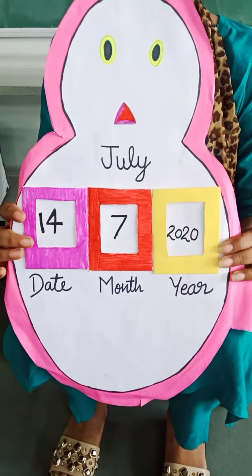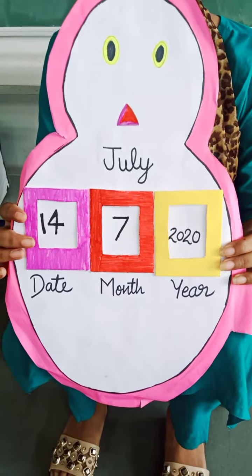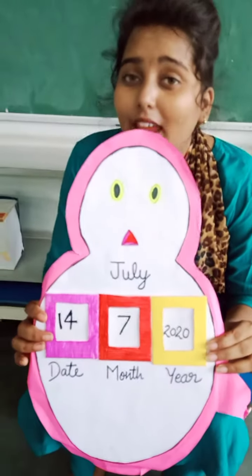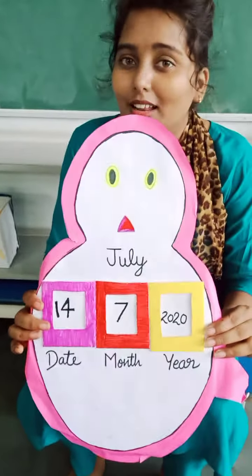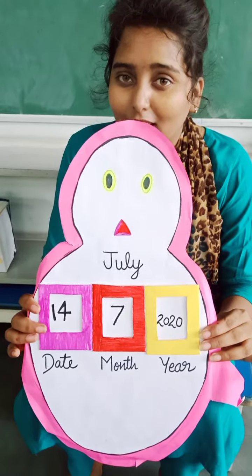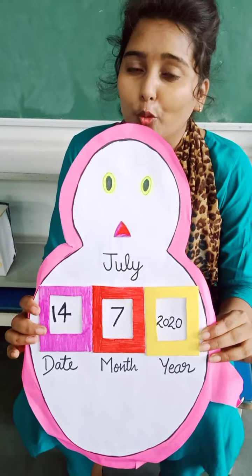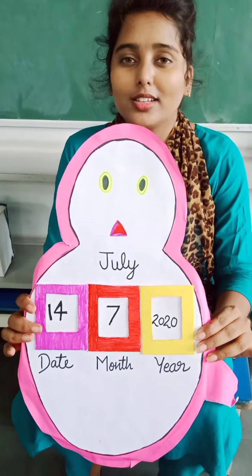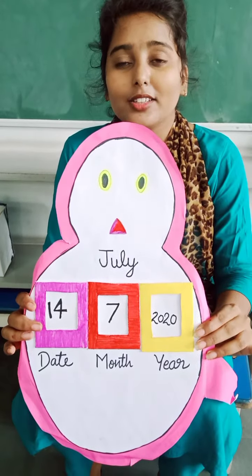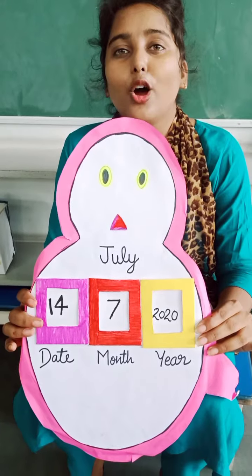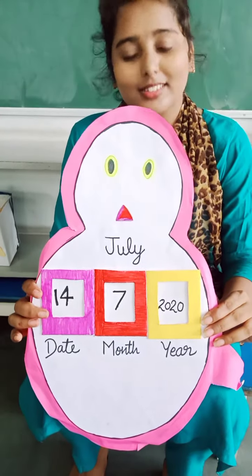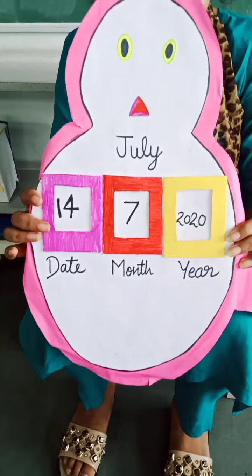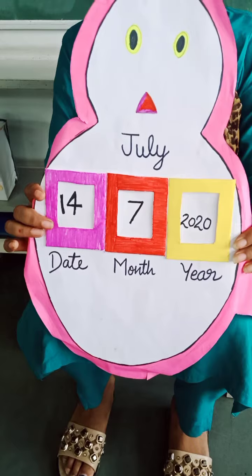They are January, February, March, April, May, June, July, August, September, October, November and December.